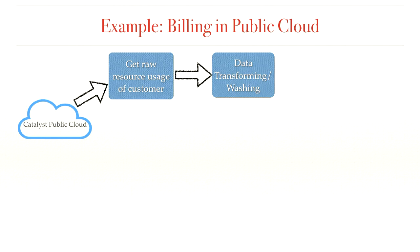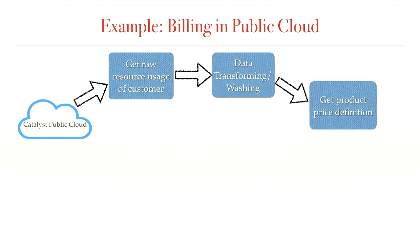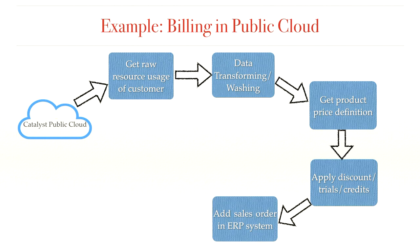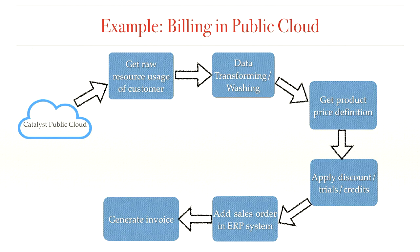We need to convert measurement units, for example from bytes to gigabytes. After that, we get the product price definition from somewhere internally for every type of resource. Before calculating the final cost, we apply discounts to customers who have vouchers, cloud trials, or other types of credits — Catalyst Cloud has different discount schemes for different customers. Then we calculate the final cost, add the sales order in our internal ERP system for review. If everything looks fine, we generate the final invoice and send it to our customers.